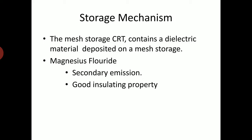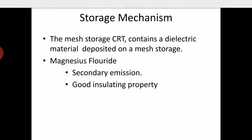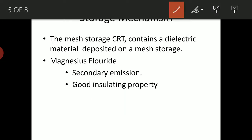The two important properties of magnesium fluoride are its secondary emission and its insulating property. Secondary emission means that if you hit this dielectric material with electrons, it will further emit secondary electrons. That is, if you bombard magnesium fluoride with electrons, it will become a positively charged material. Its insulating property helps to keep this positively charged region localized — the positive charge will not spread all over the dielectric material.